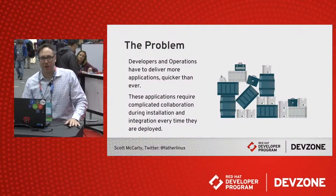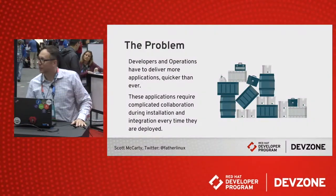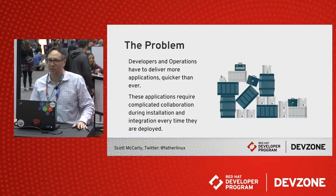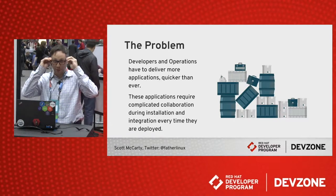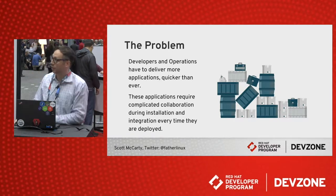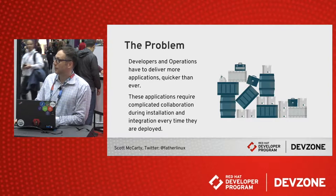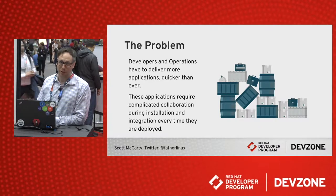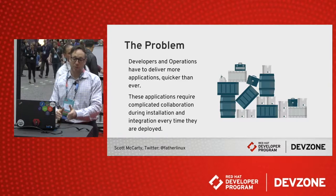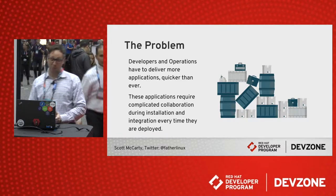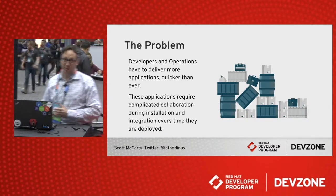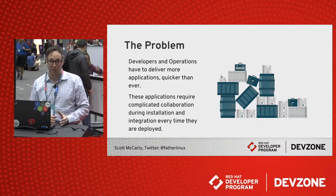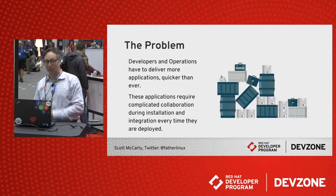So when you're trying to achieve DevOps, you've got to get back to the basics of what the actual problem is that you're trying to solve. Developers and operations essentially have to deliver applications quicker, the applications are more complicated, and they have to collaborate because there are complex interactions between the operations environment and the applications that you're delivering.